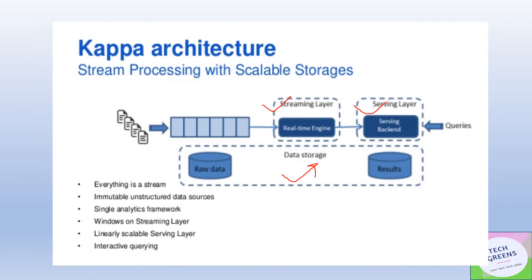There is no batch processing layer, and data is fed through append-only log technologies like Apache Kafka, which serves as the canonical store used to feed data into the speed layer and further into the serving layer.